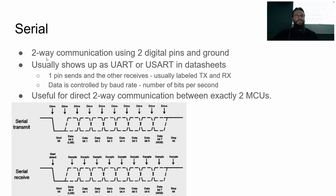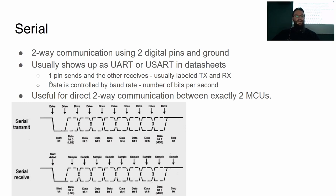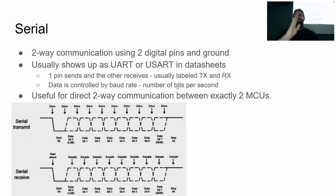The first and most common protocol everybody uses is serial. This allows two-way communication using two digital pins and ground — so three wires total for bidirectional communication. It usually shows up on a datasheet as UART or USART, which stands for Universal Asynchronous Received Transmit. One pin will be sending data and the other receiving. The way data is controlled is 100% just by bit rate — you send a bit every so many seconds and it checks the state every so often. If there are any timing issues, you'll get bad data.